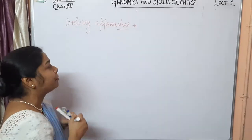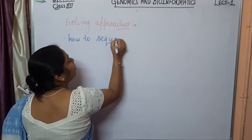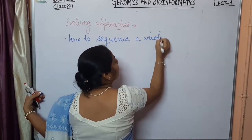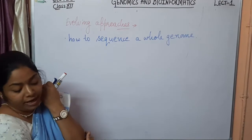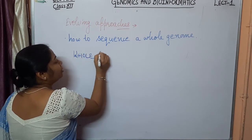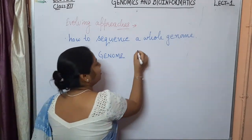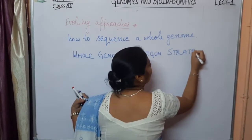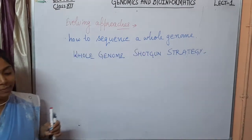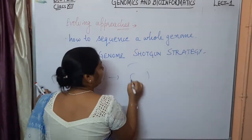Now we will discuss evolving approaches — how the whole field of genomics was generated. One key question is: how do you sequence a whole genome? This can be done by a methodology known as the whole genome shotgun strategy.